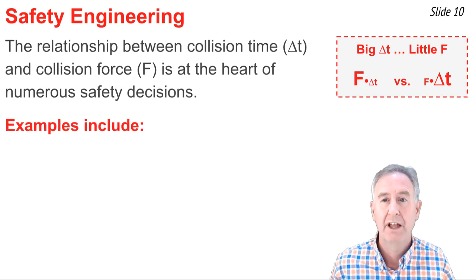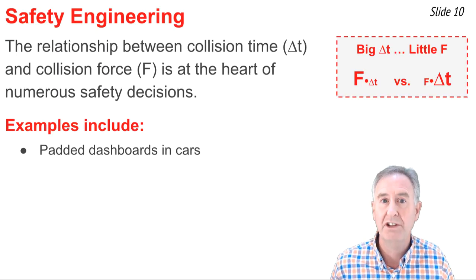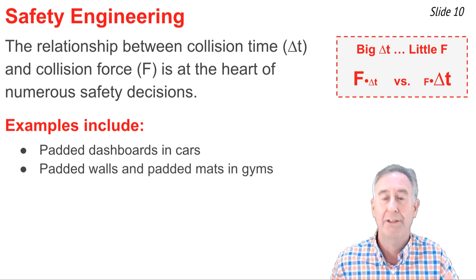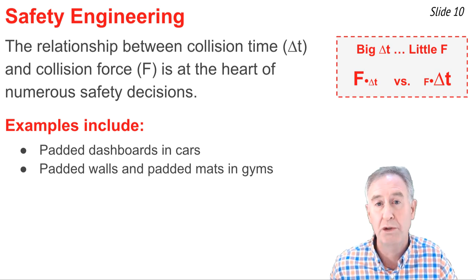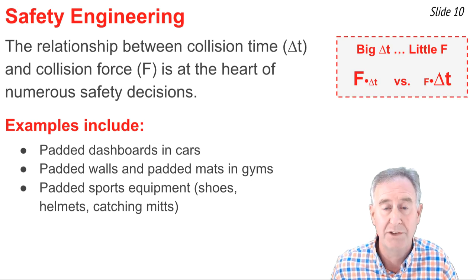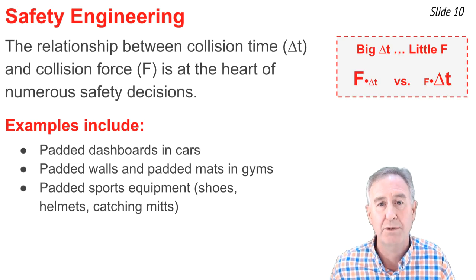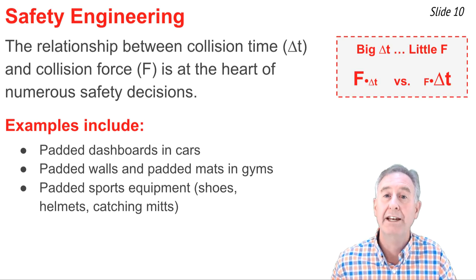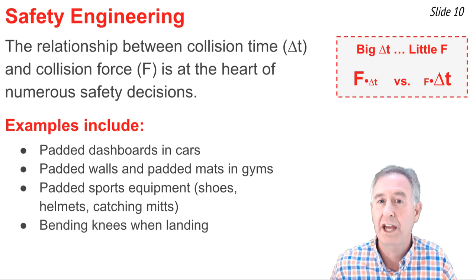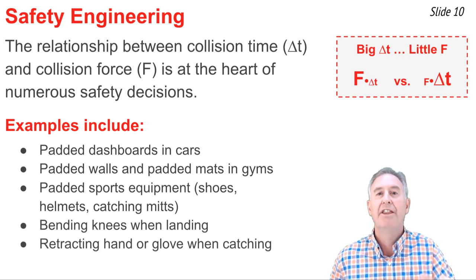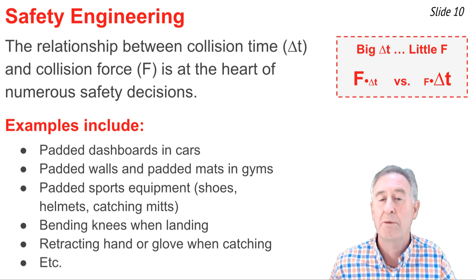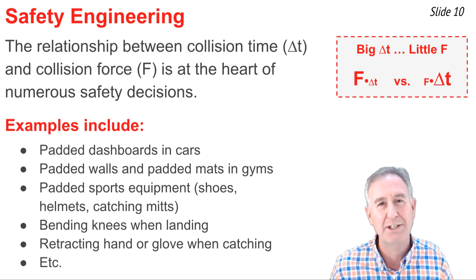Consider the following real-world examples: dashboards of cars are padded to extend the collision time; gymnasium walls behind the basketball hoop are padded; gymnasts perform on padded mats; sports helmets are padded on the inside; gloves have padding — all extending collision times. When you jump and land, you bend your knees instead of keeping them straight in order to extend the collision time. When catching a ball, you retract your hand backwards instead of holding it stiff, extending the collision time. Numerous designs aim for a big delta T so that the force is small — and that's physics for better living.